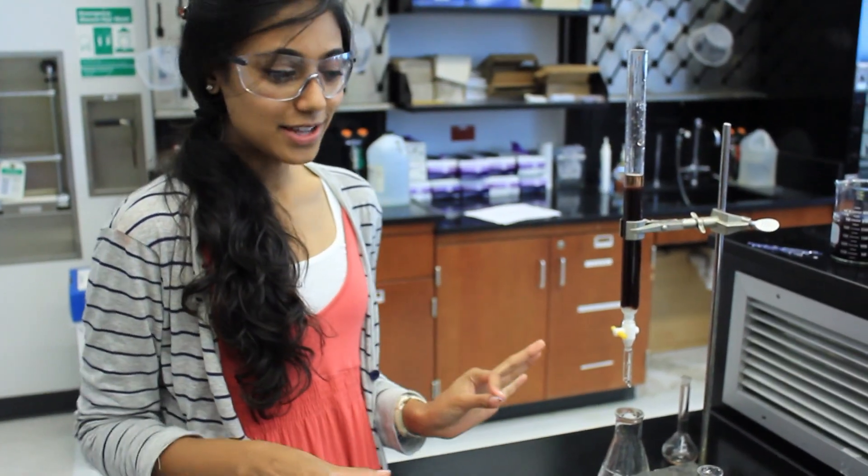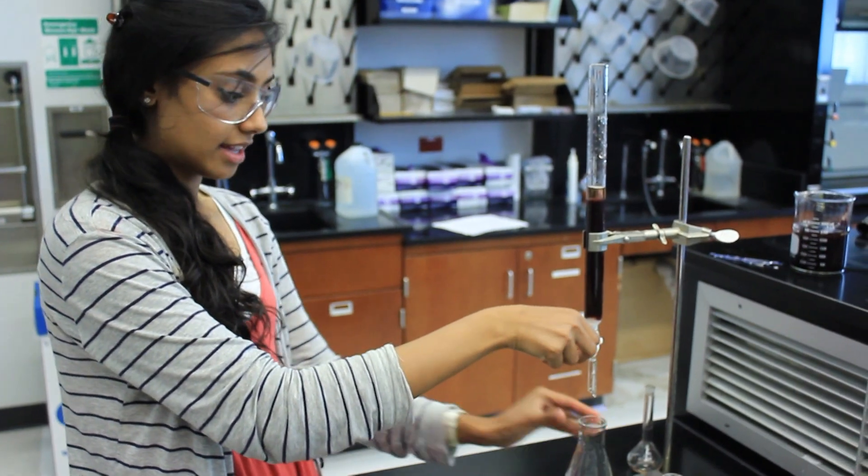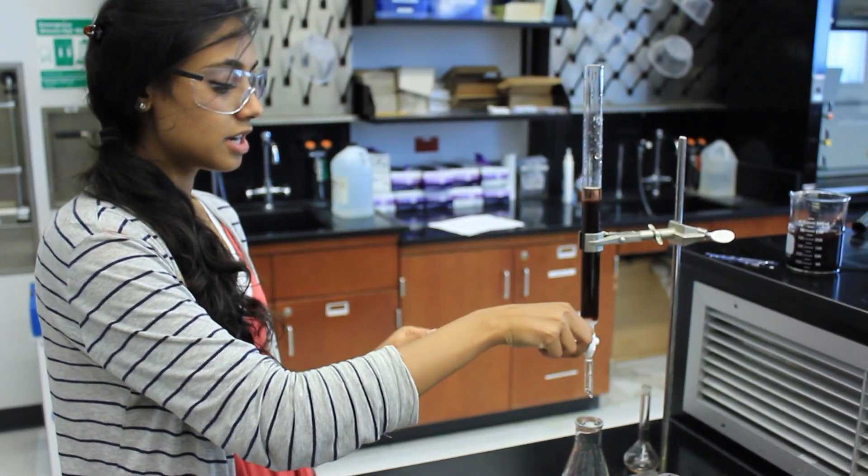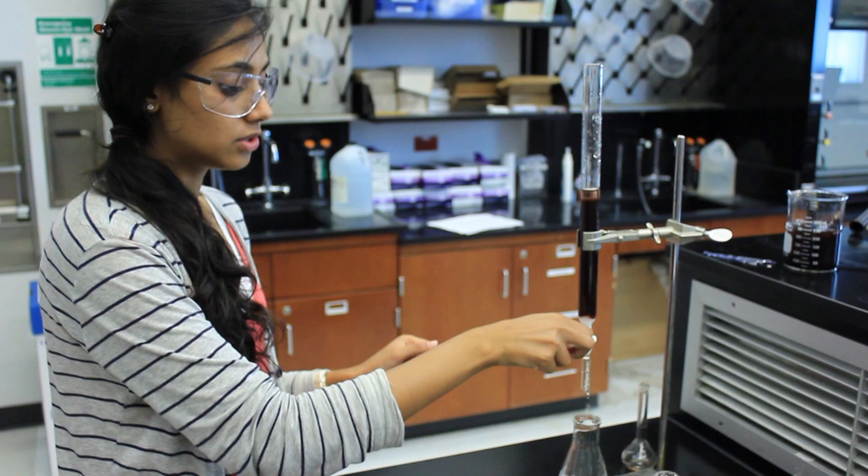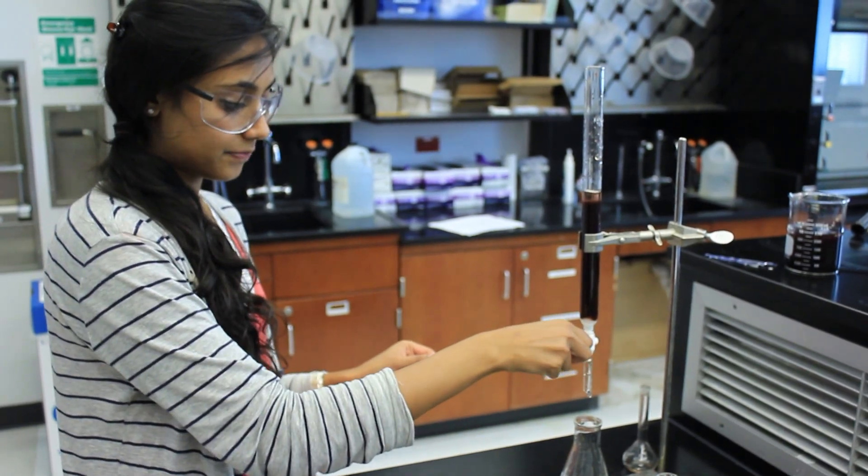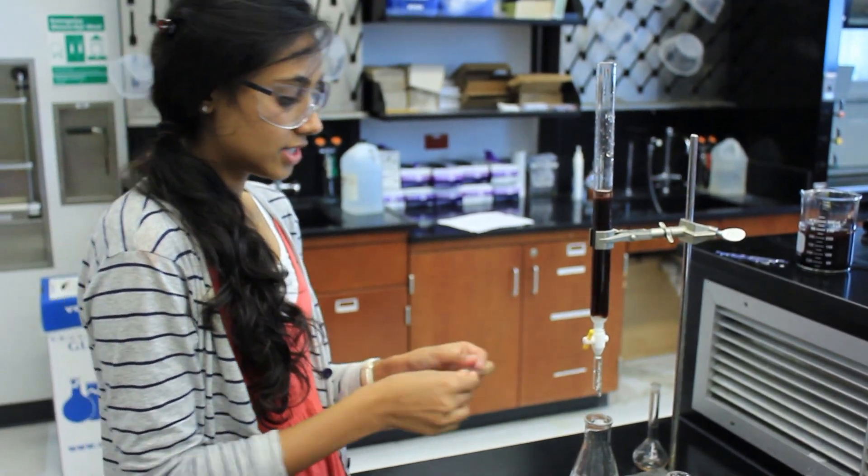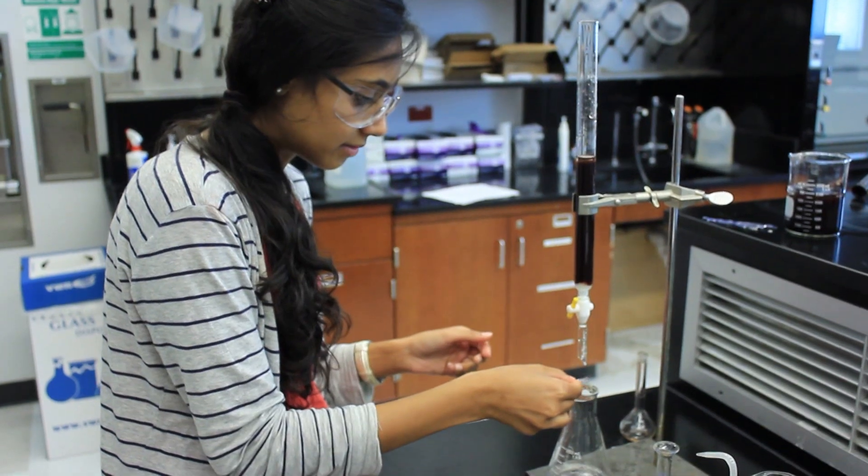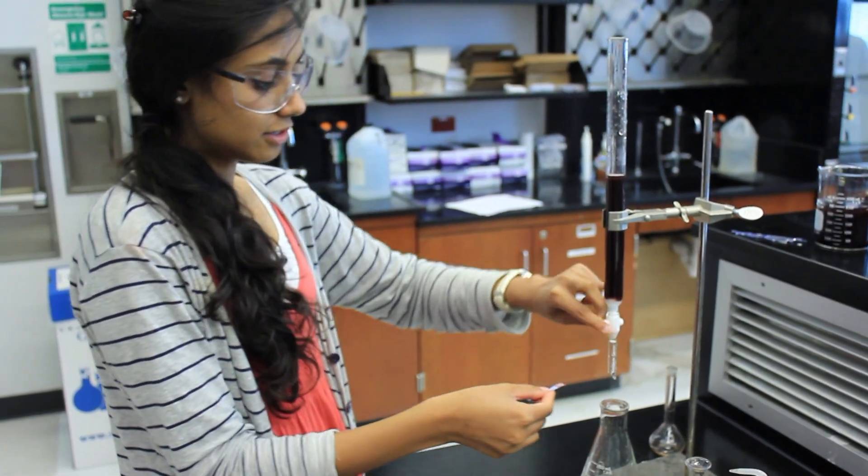Now we have to wait for the effluent to become neutral again. So make your column drop at a rate of two to three drops per second. And just take your litmus paper and test it really fast.